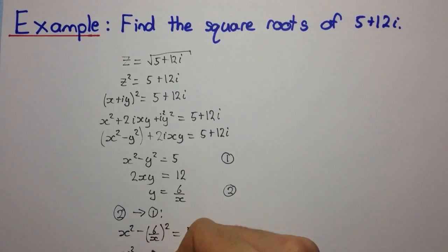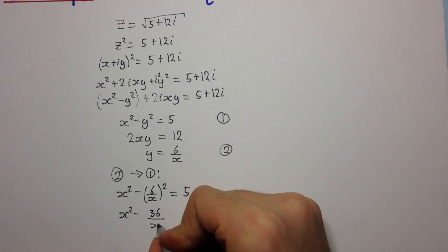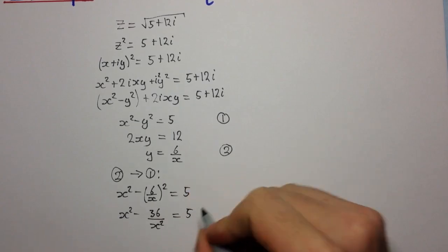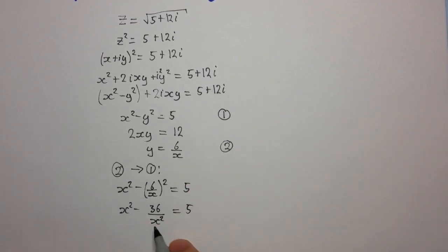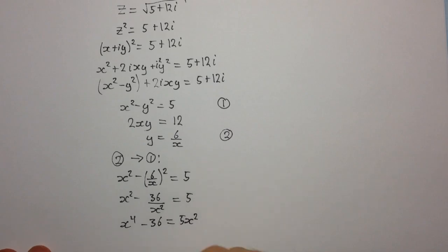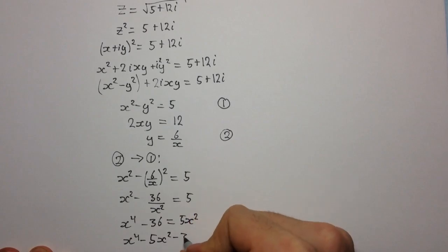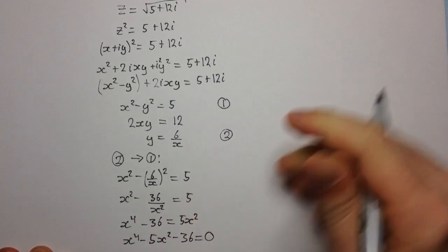Now we can multiply through by x squared and get x to the power 4 minus 36 equals 5x squared. And then bring this 5x squared over to this side and get x to the 4 minus 5x squared minus 36 equal to 0.